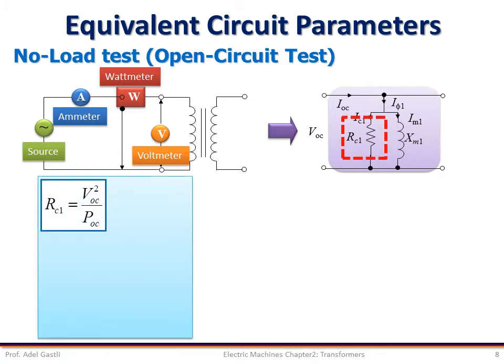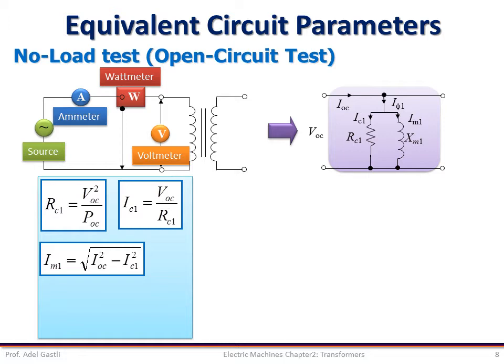Using this equivalent circuit, we can deduce the core loss resistance RC1 as the ratio of the square of the open circuit voltage VOC squared over the measured open circuit power POC. The current IC1 in the core loss resistance RC1 is equal to the ratio of the voltage and the resistance RC1. Then we can calculate the magnetizing current RMS value IM1 as the square root of the difference between the square of the total input current I_OC and the square of the core loss current IC1. Finally, the magnetizing reactance XM1 can be calculated as the ratio of the open circuit voltage VOC over the magnetizing current IM1.